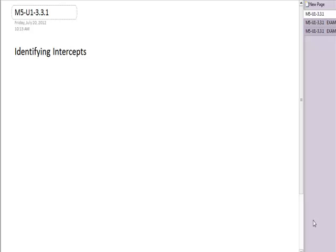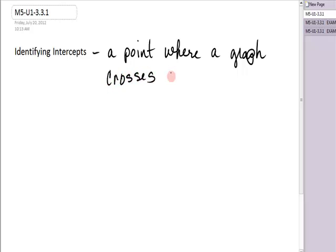This lesson is about identifying intercepts and then we'll be using intercepts to graph our linear equations. An intercept is a point where a graph crosses an axis.